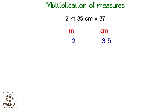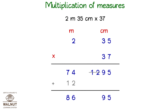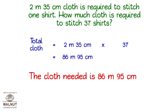We now have to multiply. We write the units, and below that we write the measures, then we get ready to multiply. Look at the number under centimetres — we can see we have to adjust it. We know that 100 centimetres is equal to 1 metre. Here we have 12 metres which we club with the metres and keep the remaining centimetres. We add up the metres. Total cloth = 2 metres 35 centimetres × 37 = 86 metres 95 centimetres. So, the cloth needed is 86 metres 95 centimetres.